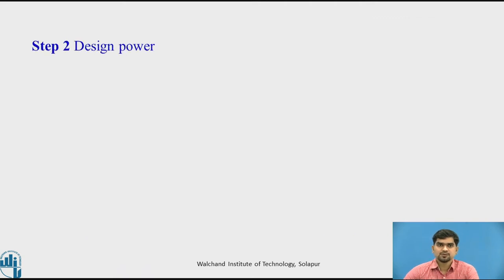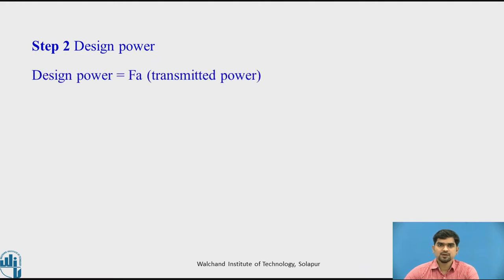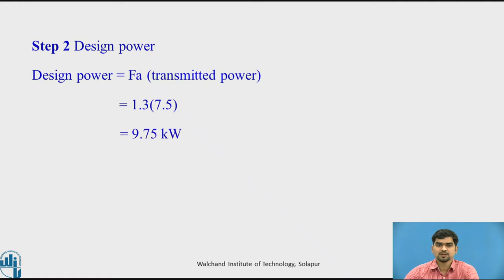Step 2: we have to find out the design power. The equation is: design power equals Fa multiplied by transmitted power. We have already calculated Fa as 1.3 and the transmitted power given is 7.5 kilowatt. So the design power comes out to 9.75 kilowatt.